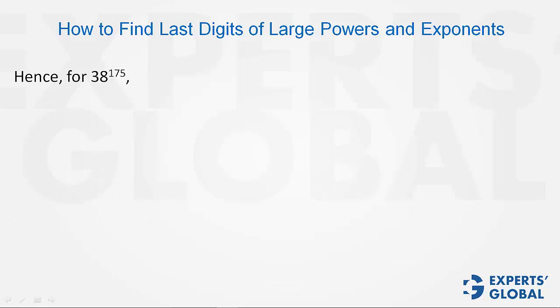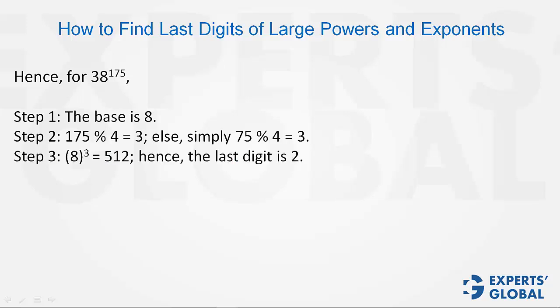So, 38 raised to power 175. Step 1: base is 8. Step 2: remainder of 175 with 4, or simply 75 with 4, is 3. Step 3: 8 raised to power 3 equals 512. Therefore, the last digit is 2.